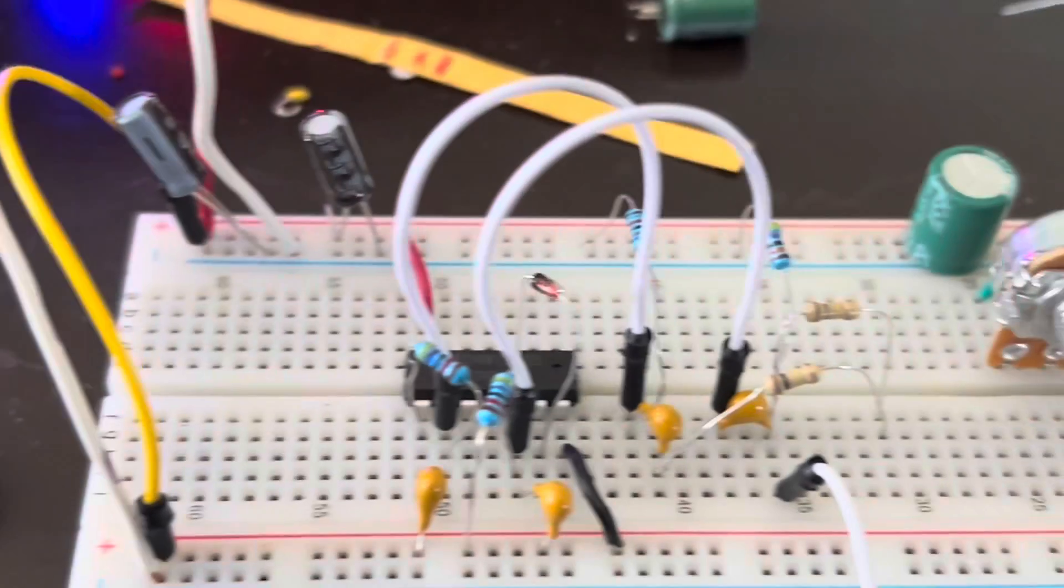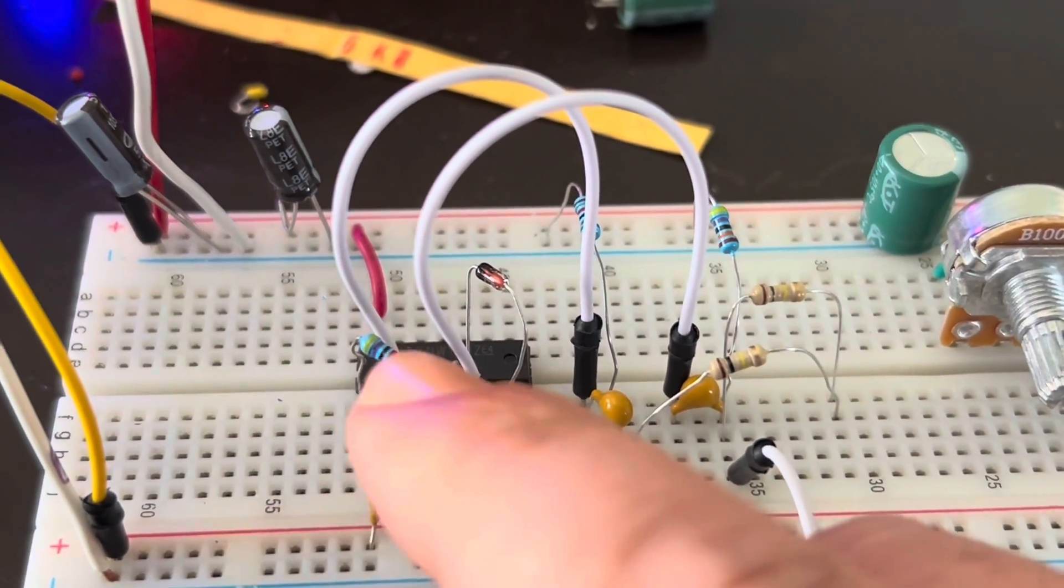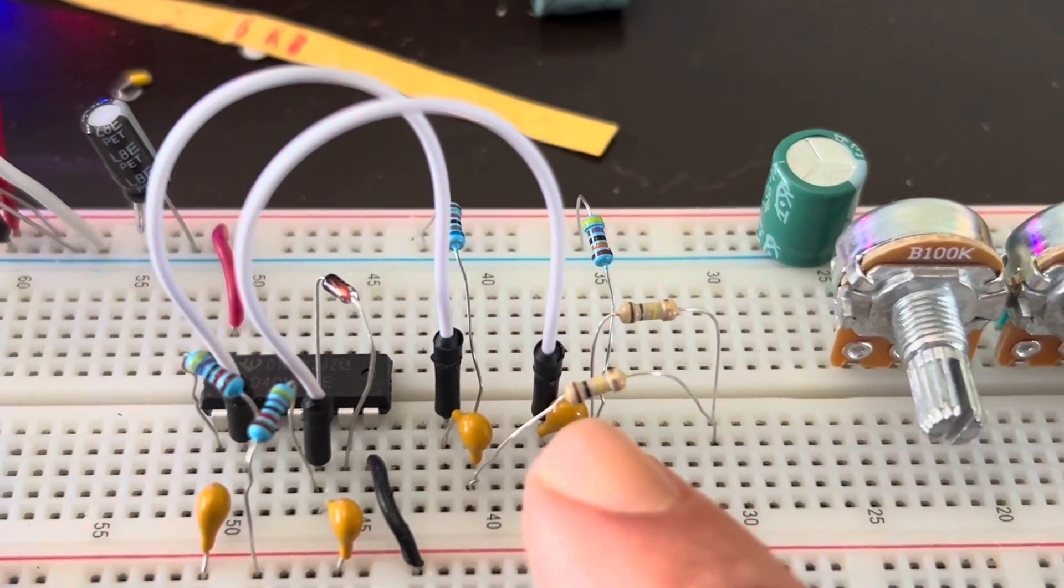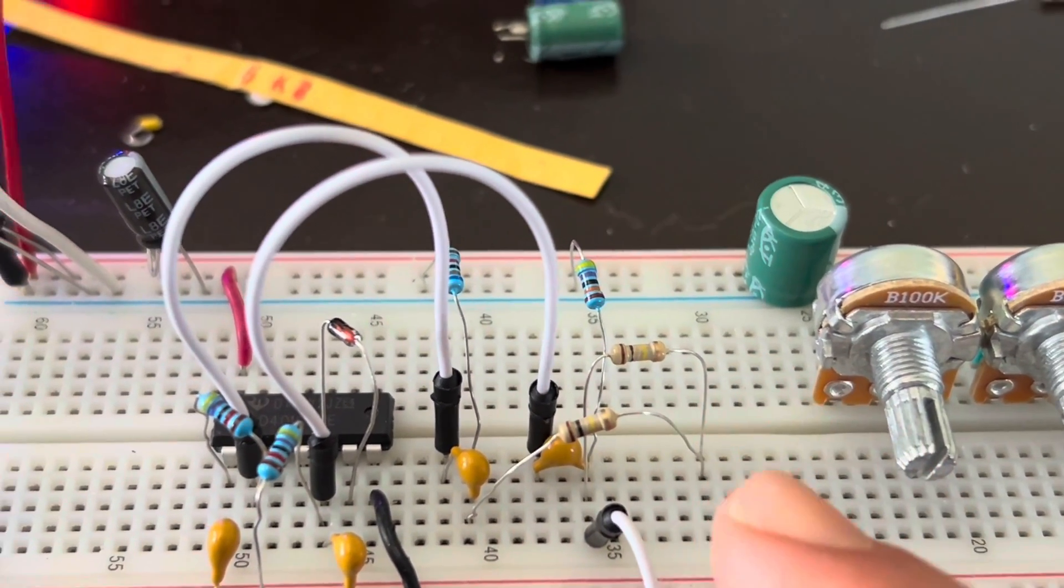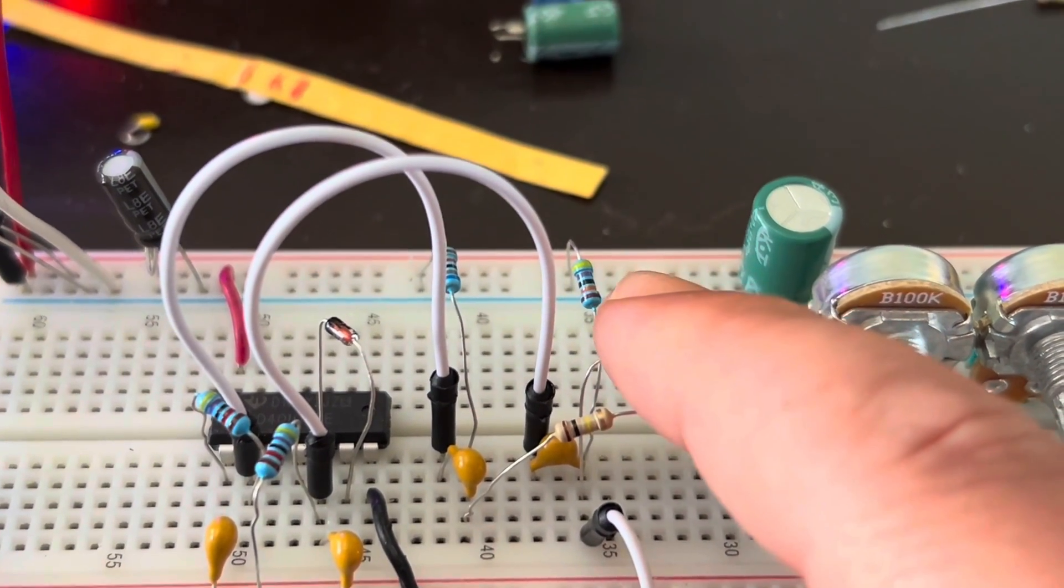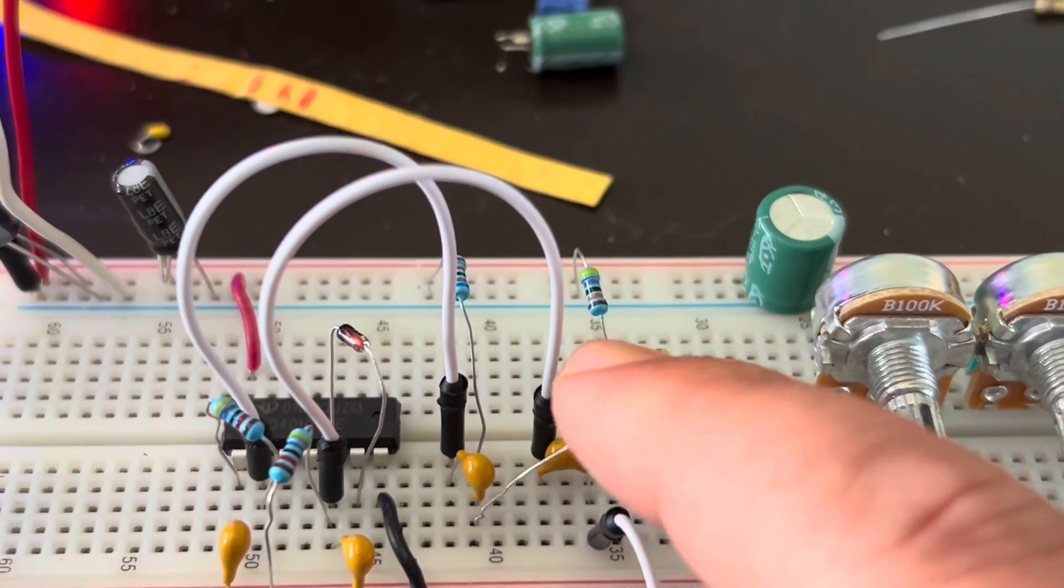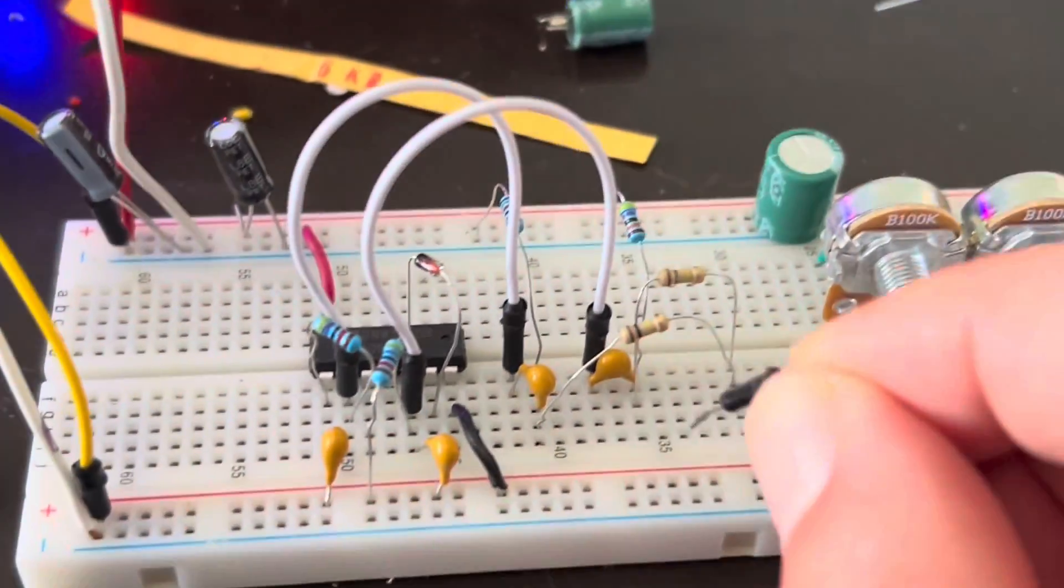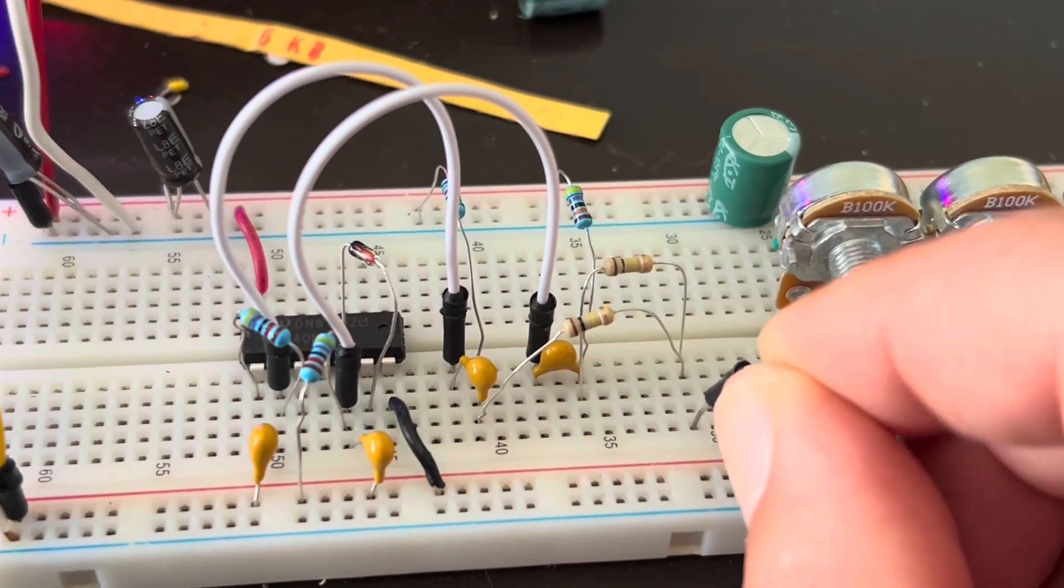And so, in order to get these two to mix, I put these two 100k resistors, one from the output of that and one from the output of that. And they're all going to the same place. And what we're going to see is the combined output. That's a passive mixer circuit.